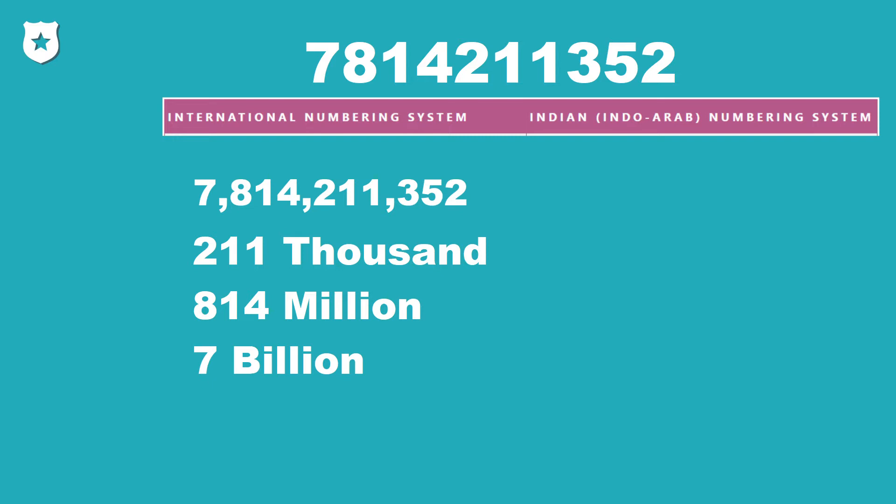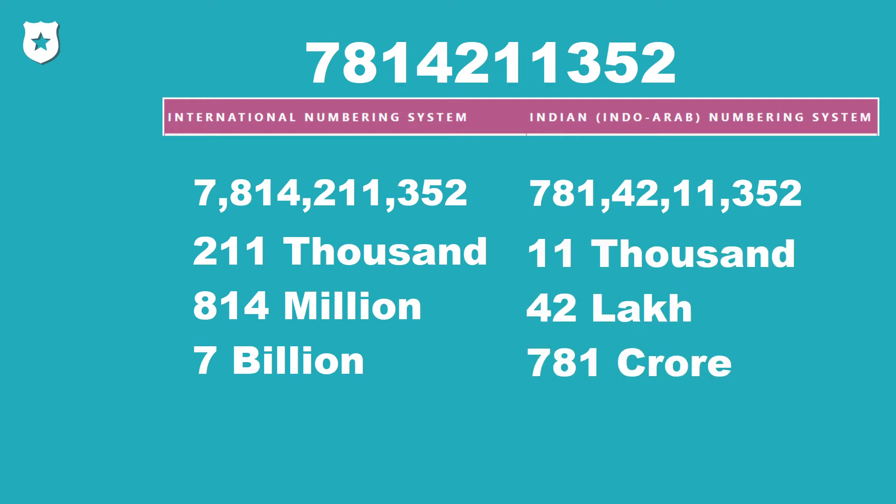The second numbering system is the Indian numbering system. Here also we will group the digits of the number. The first group contains the first three digits; from now onwards each group contains only two digits. Just like the international numbering system, we won't label the first group. The second group is labeled as thousand, the next as lakhs, and the next as crores, and so on. After the crore group, if further groups are there, we will start from the beginning. In between each group we will put a comma, so our number will look like 7,81,42,11,352.